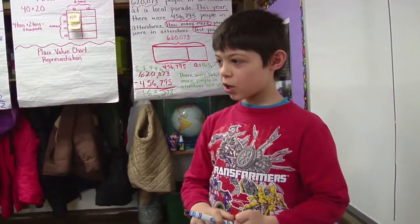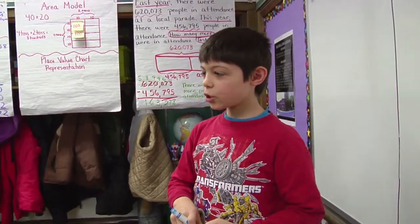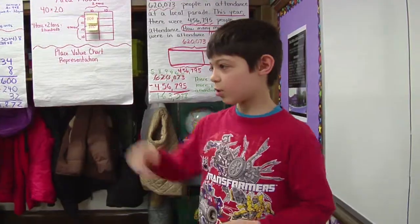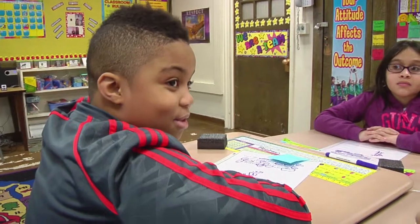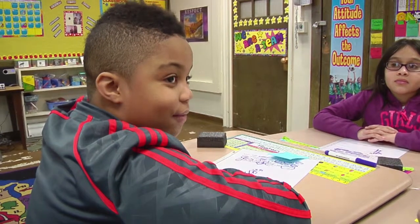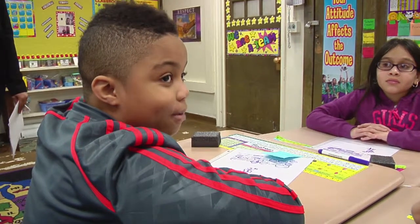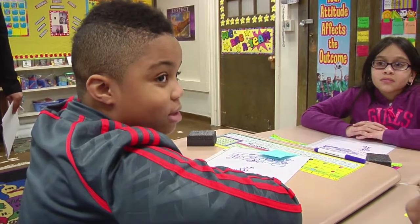So, what's the whole here, scholars? Rayshon. The dividend, or the whole in this problem, is 57.